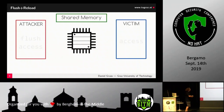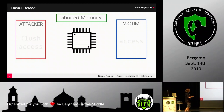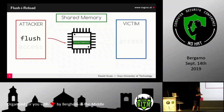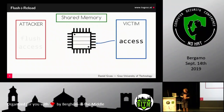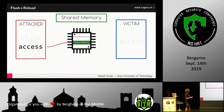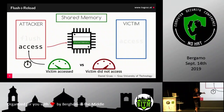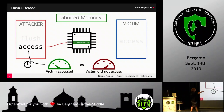This is Flush+Reload. We have shared memory — shared between processes and shared in the processor cache. An attacker and victim may share a library. If the attacker flushes a memory location, they know it shouldn't be in cache anymore — unless the victim accesses exactly that location. Then the attacker measures access time: fast means the victim accessed it; slow means they didn't. This gives a 64-byte granularity view of what other programs do.